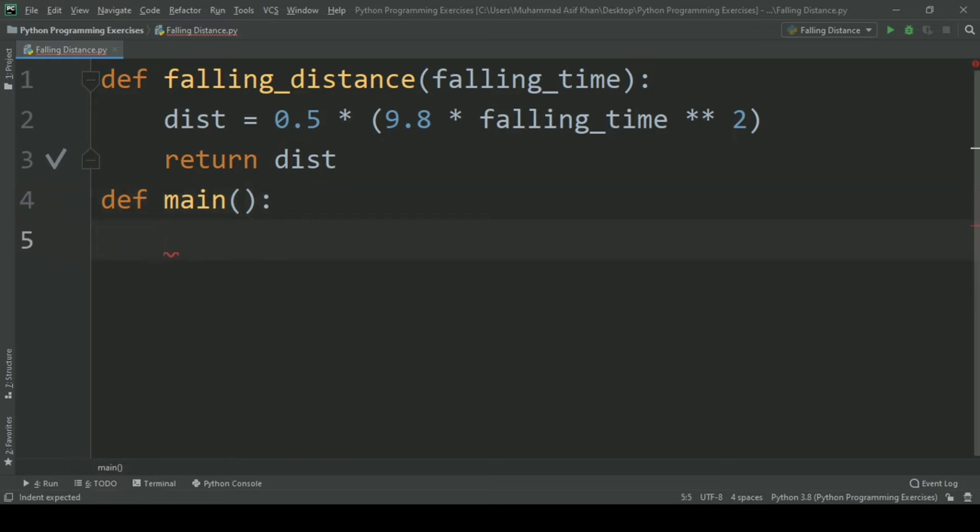In main function create a for loop: for x in range 1 comma 11, so that the loop will iterate 10 times.